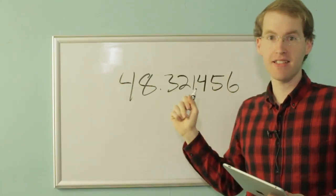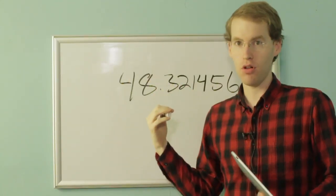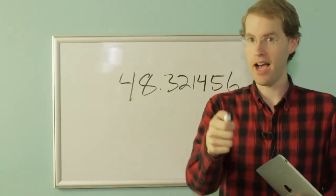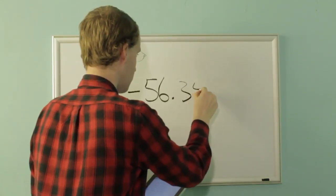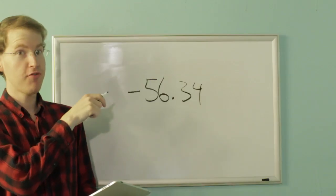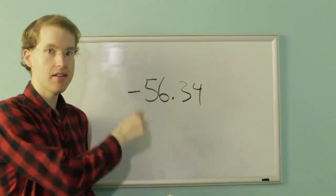48.321456, not an integer, because it's a decimal. A decimal number is not a whole number, therefore, not an integer. Negative 56.34, not an integer. That's a decimal. It's not a whole number. It's not an integer.